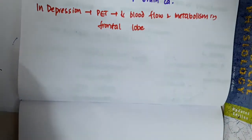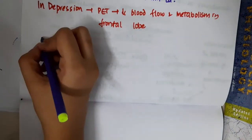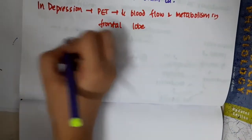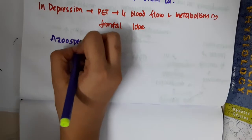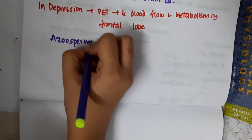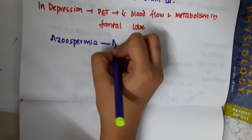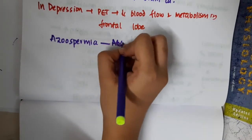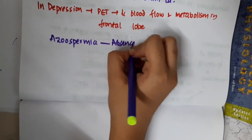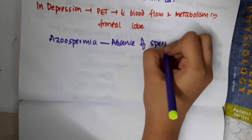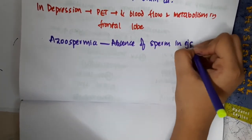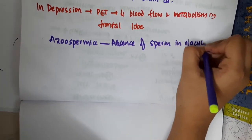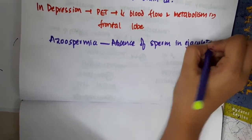Hello friends, let us now learn this table. Azoospermia — what is Azoospermia? Azoospermia is absence of sperm in ejaculate.